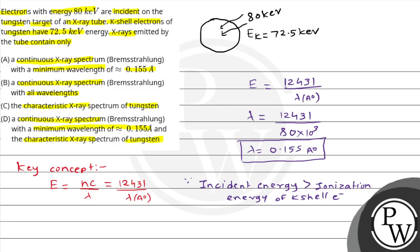So हम लोग कह सकते हैं कि यहाँ पर continuous x-ray spectrum तो emit होगा, but उसके साथ therefore there will be a characteristic x-ray spectrum भी। Continuous x-ray का wavelength 0.155 Angstrom होगा और इसके साथ characteristic x-rays भी होंगे। Option A, B, C गलत हैं — option D जो है वो हमारा right answer हो जाएगा इस case में। So I hope you have understood it well and best of luck.